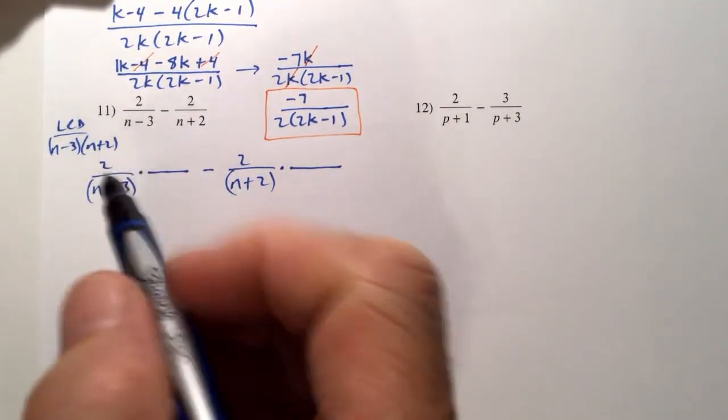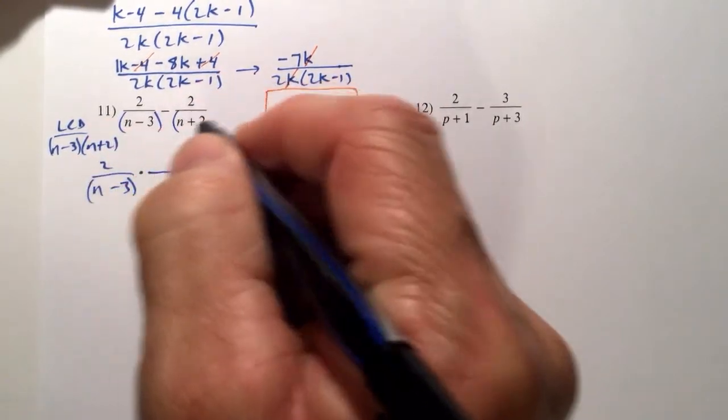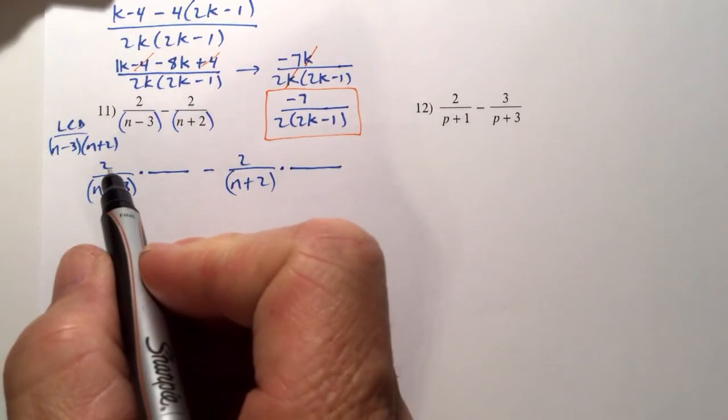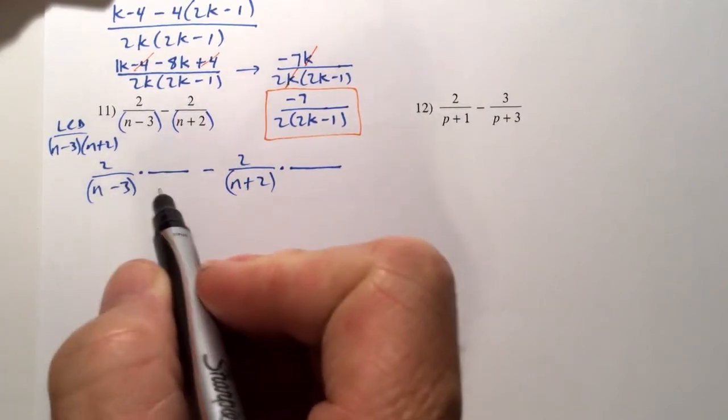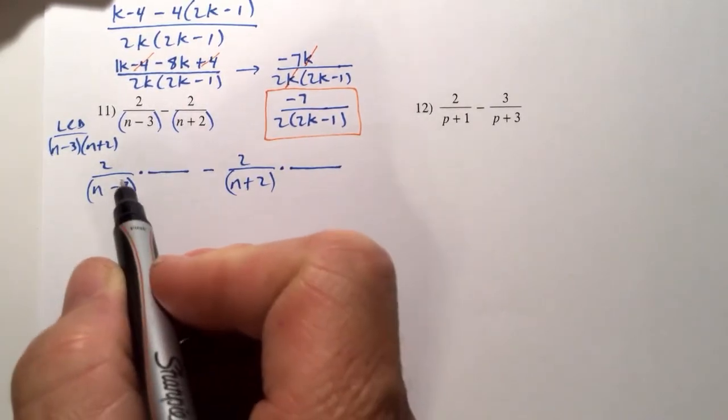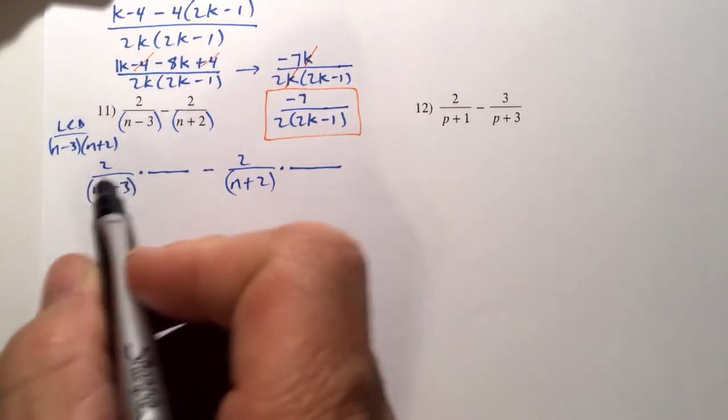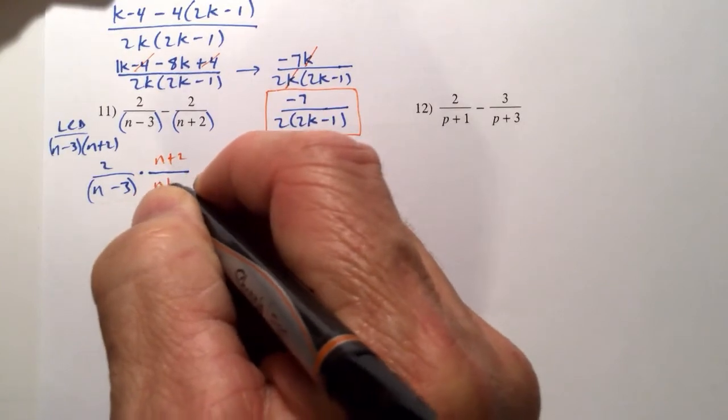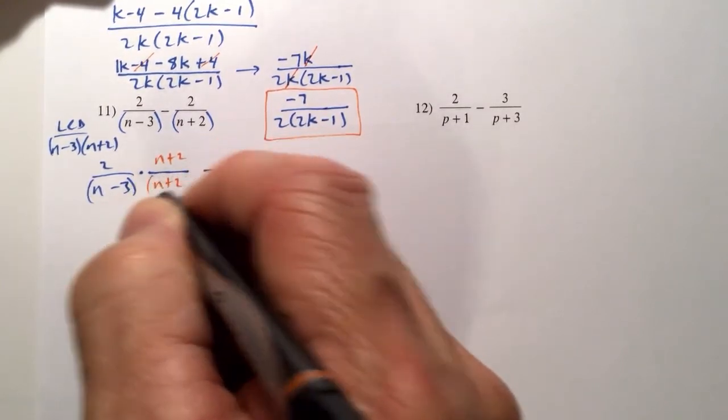What is the lowest common denominator? That denominator multiplied by that denominator. And so we multiply the first fraction by 1 in the form of whatever this denominator is missing. So this denominator here is missing an n plus 2. So we multiply top and bottom of the fraction by n plus 2.